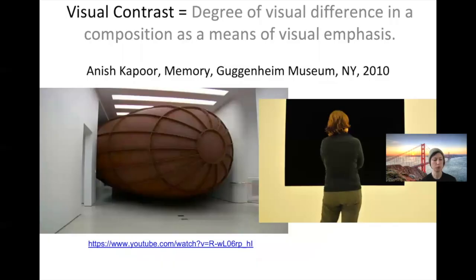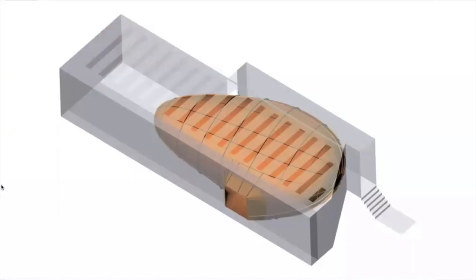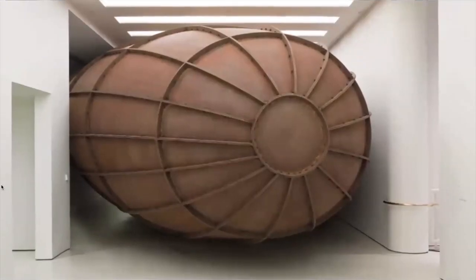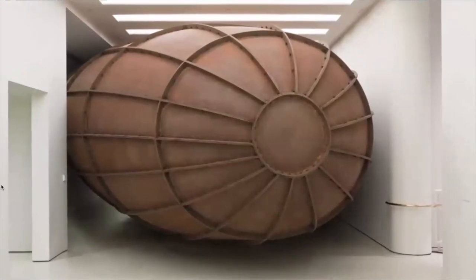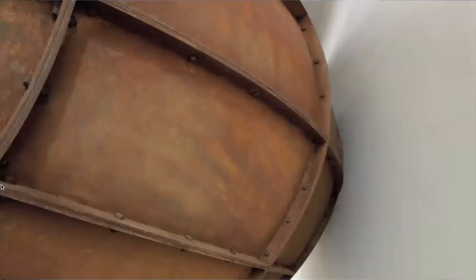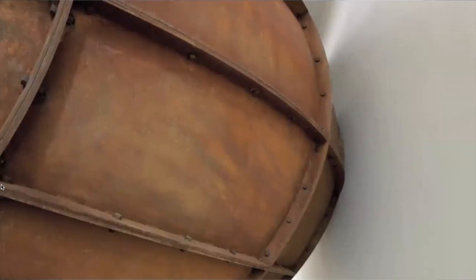...uses visual contrast in this show at the Guggenheim, which was on view when I worked there. The piece consisted of a huge steel vessel that was completely hollow. The sculpture had an opening framed by a wall in another gallery of the museum, so that you could walk up to the wall and look inside the vessel, which appeared as a black square on the wall.